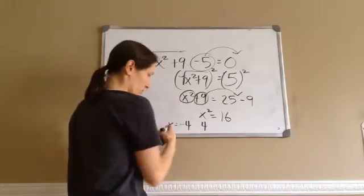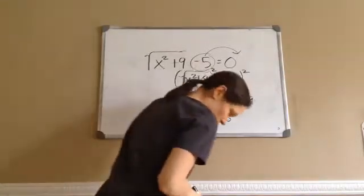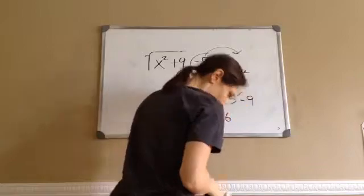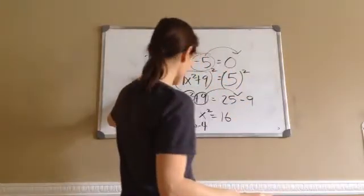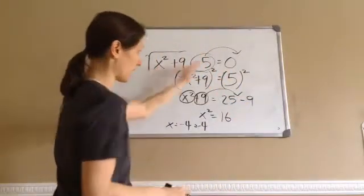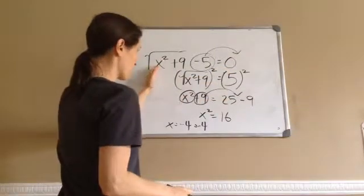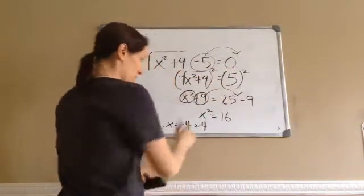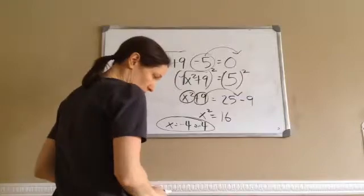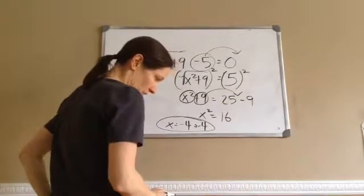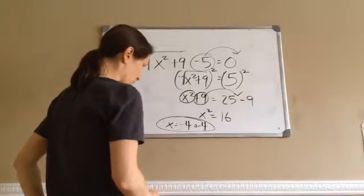So x equals negative 4 or positive 4. You can go back and substitute both negative 4 and positive 4 into the original to verify — both give the same result, confirming x = ±4.